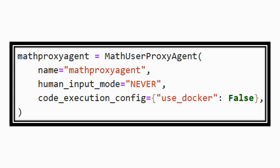This is a variation of the code shown in a previous video. Here, code_execution_config is set to false, in which case it will not check if the code is to be executed with Docker and directly goes to native code execution. But if this is not given, it first tries to execute using Docker, and if that fails, it falls back to native code execution.